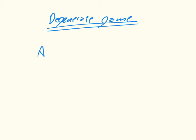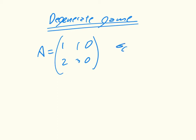A simple example is if we have the matrix A = [[1, 1, 0], [2, 3, 0]], and we consider σ_c to be equal to (0, 0, 1).